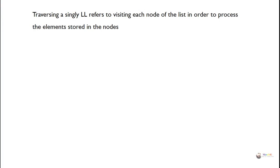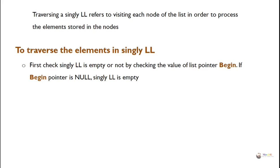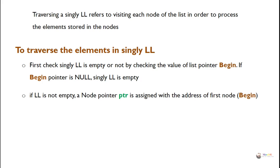Traversing a singly linked list refers to visiting each node in order to process the elements stored in the nodes. To traverse, first check whether the linked list is empty by checking the value of the begin pointer. If begin is null, the singly linked list is empty.